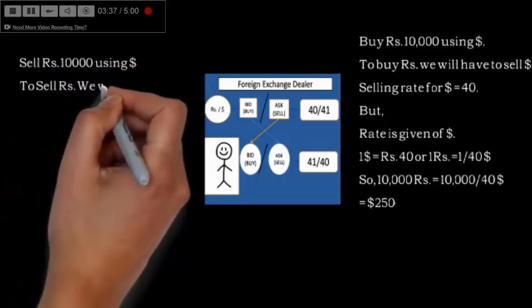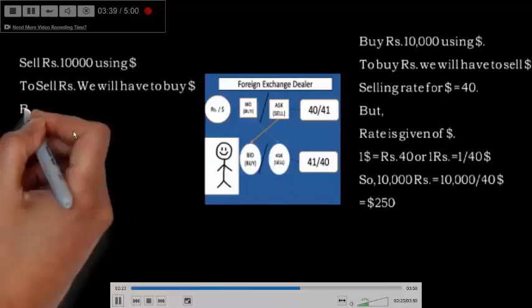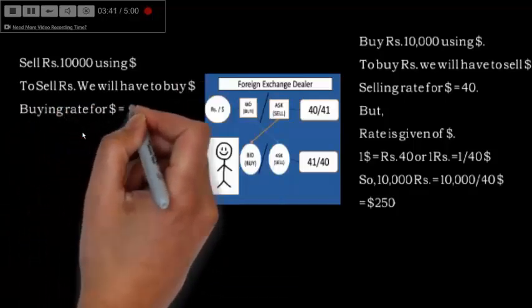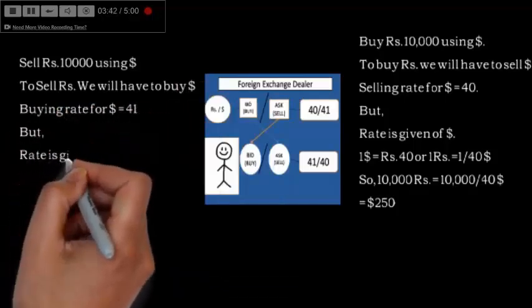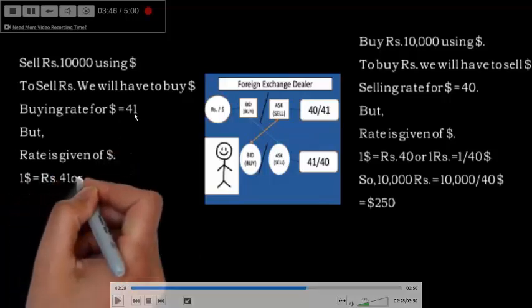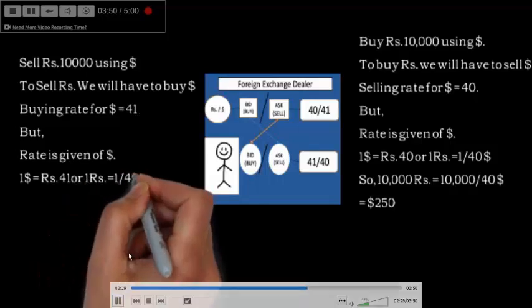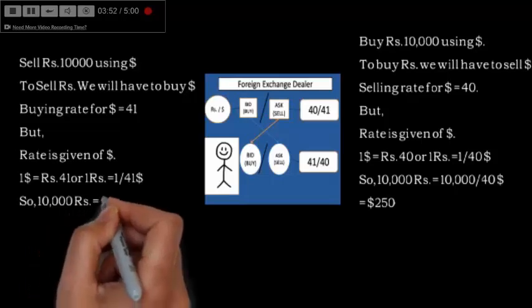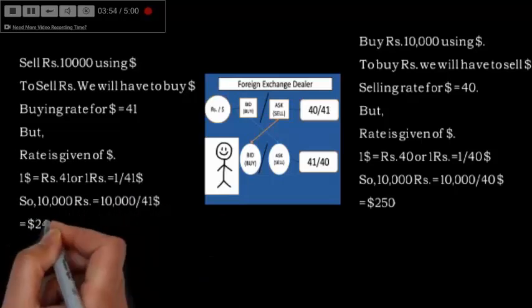On the other side, I am selling 10,000 rupees, so I will have to buy dollar. The buying rate for dollar is 41, so 1 rupee equals 1 by 41. By selling 10,000 rupees I will get dollar 243.90.